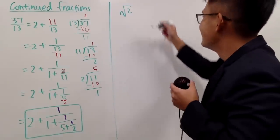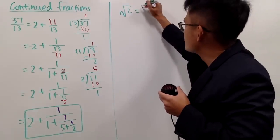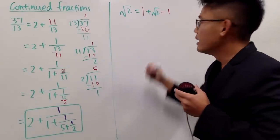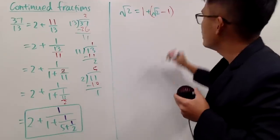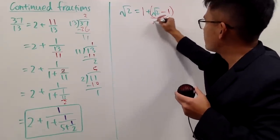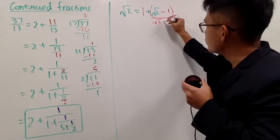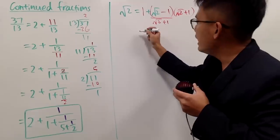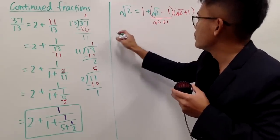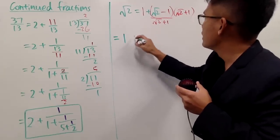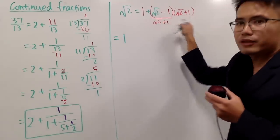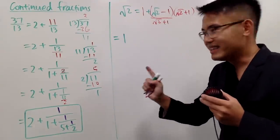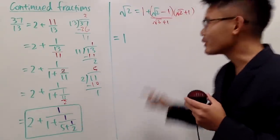So I will write this as 1 plus (square root of 2 minus 1). Of course, they are still the same. Looking at this, let's multiply the bottom and top by its conjugate, which is (square root of 2 plus 1), and also multiply by (square root of 2 plus 1) here. We will see that on top we get 2 minus 1, which is 1 — and that's the 1 we like.